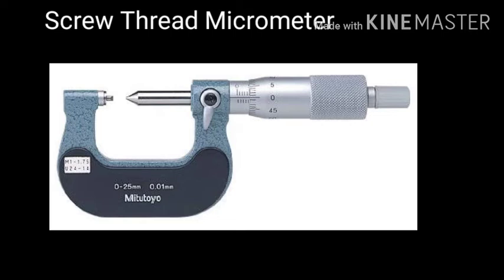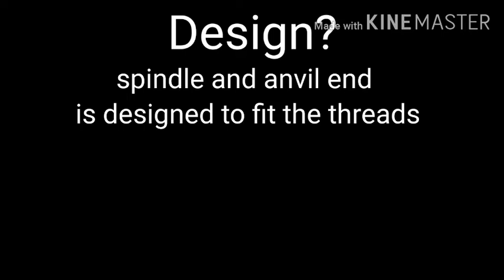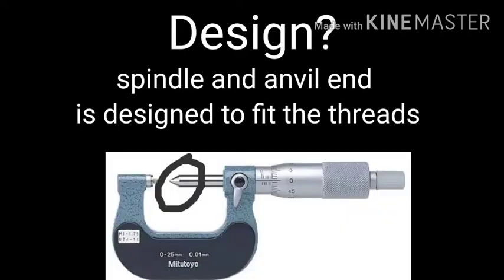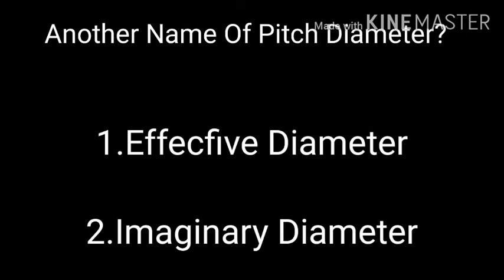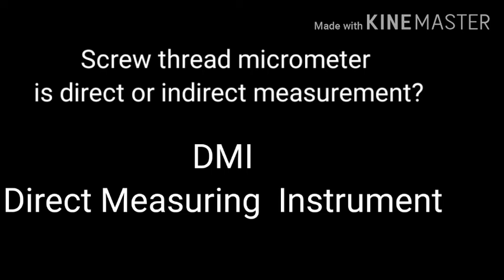First, we will measure the thread — the diameter of the thread. The spindle is a little different. The pitch diameter is: major diameter minus single depth. This is the formula. The diameter of the thread is the imaginary diameter. So, this screw thread micrometer is a direct measuring instrument.